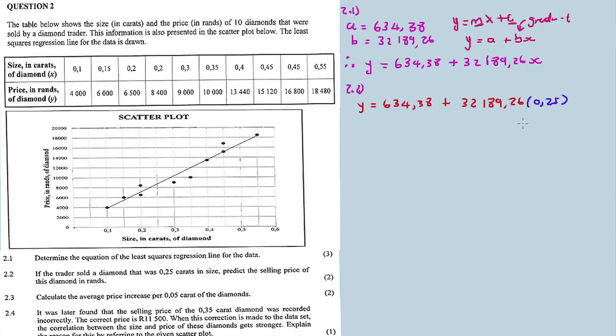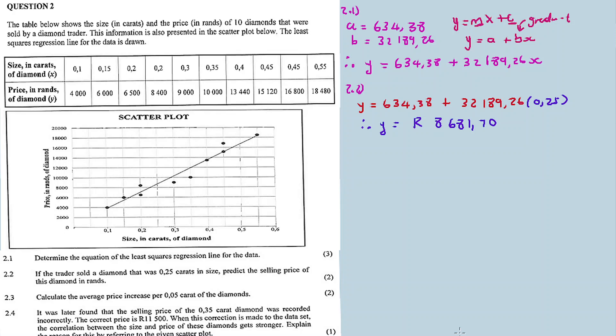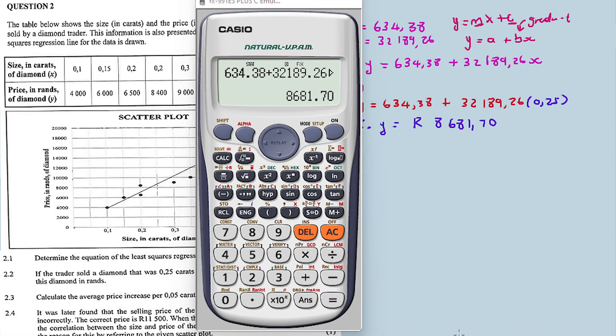So y is equal to, when the x value is 0.25, let us calculate: 6634.38 plus 32189.26 bracket 0.25, equal to 8681.70 in two decimal places.